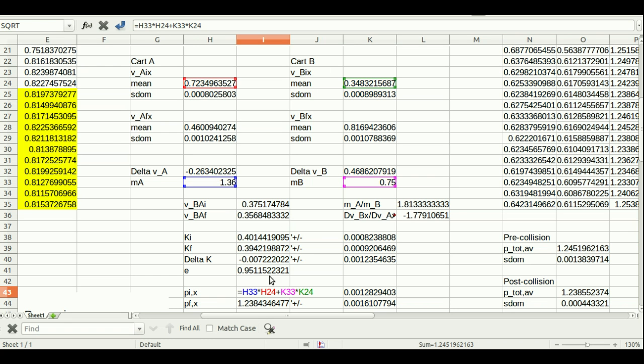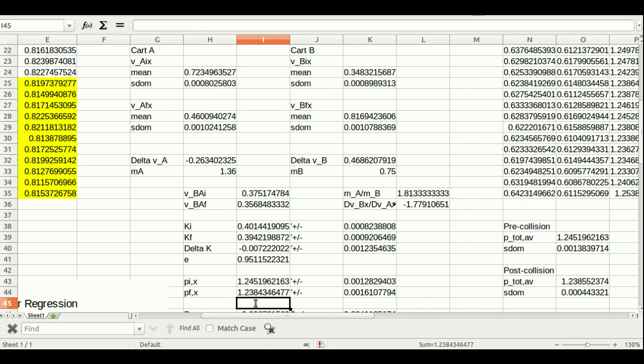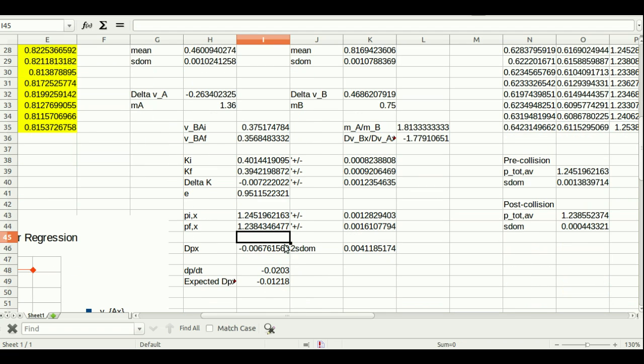Here down near the bottom of the screen with the cell references highlighted in different colors is where I calculated the initial system momentum. You can see it is just MA*VA plus MB*VB like you would expect and then I did the same thing for the post collision to get the final momentum.